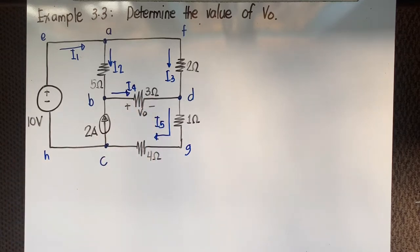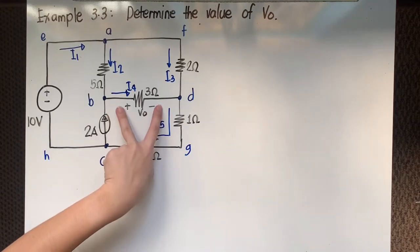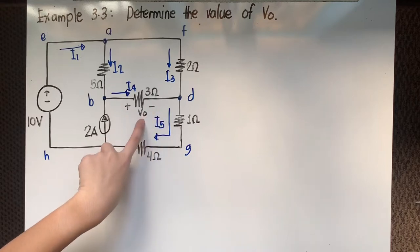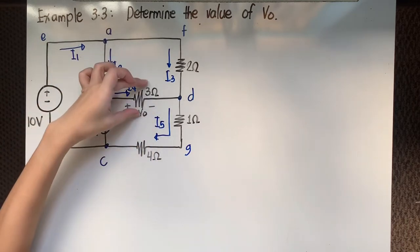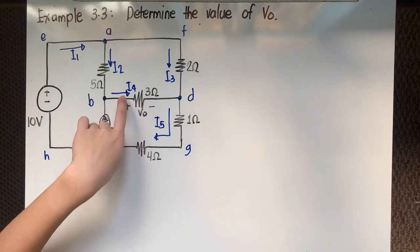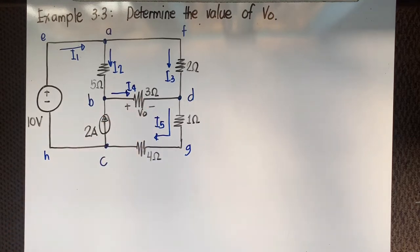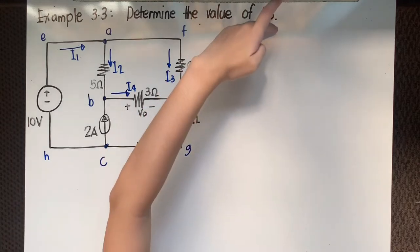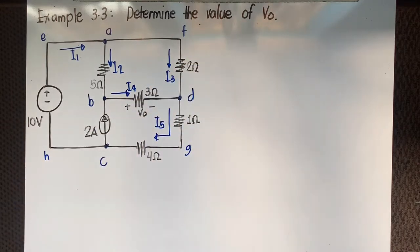V sub O represents a voltmeter reading across the 3-ohm resistance — it is the voltage drop of that resistor. So the priority is to solve for the current flowing through the 3-ohm resistor, which is I sub 4. For the purpose of learning Kirchhoff's analysis, however, we will solve all branch currents in the circuit.